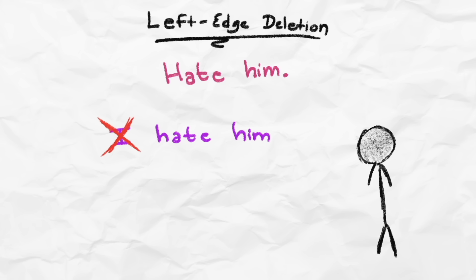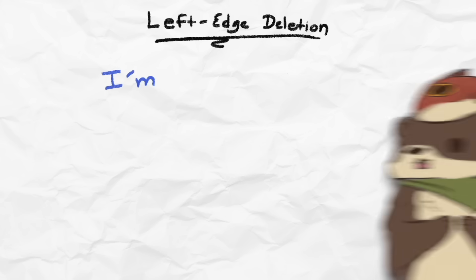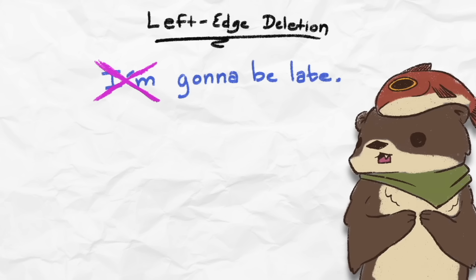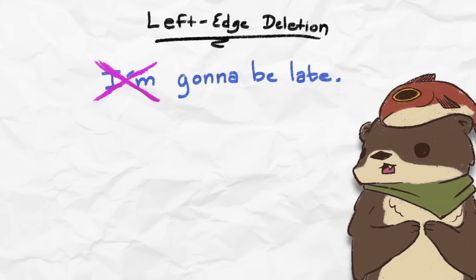So, rather than saying, I hate him, they just say, hate him. Another example is a person who is running late to a meeting. They might say, gonna be late, rather than saying, I'm gonna be late. Once again, the subject is obvious, so it's dropped.